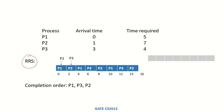Now for round robin scheduling with a quantum of 2: P1 starts at time 0. At time 1, P2 arrives and joins the ready queue. P1 runs until time 2, then P2 starts running. At time 3, P3 arrives and joins the ready queue. P2 completes its quantum of 2 at time 4. The ready queue now contains P1 and P3, so P1 starts running and P2 goes back to the ready queue.